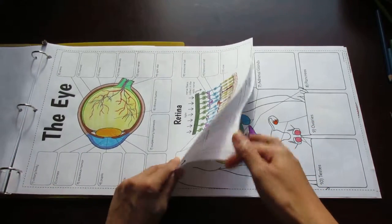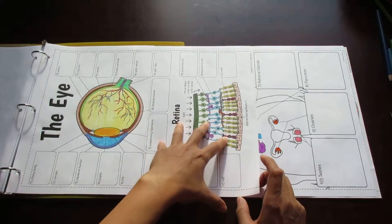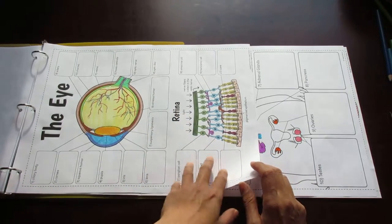Here's the eye. It's a two-page foldable. And instead of just showing the eye, I also have the retina shown. So you can choose to use that or not.